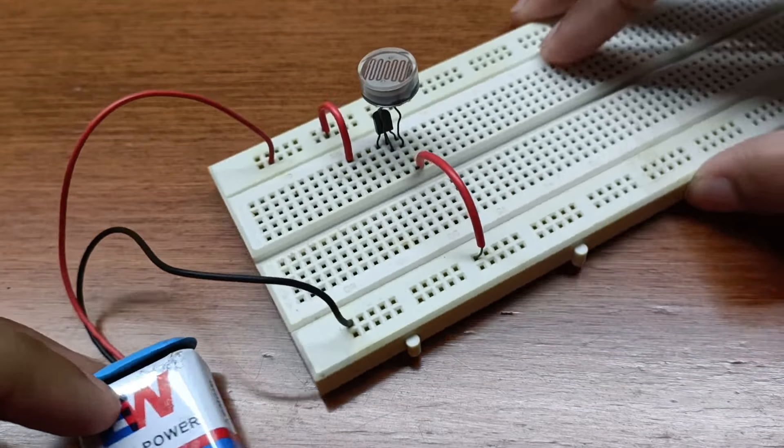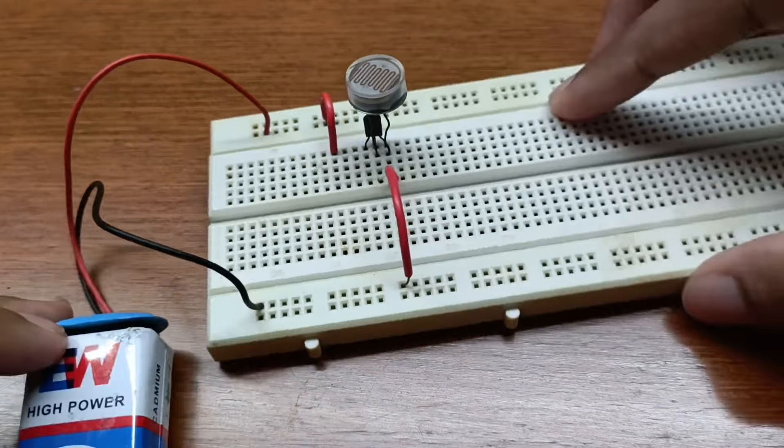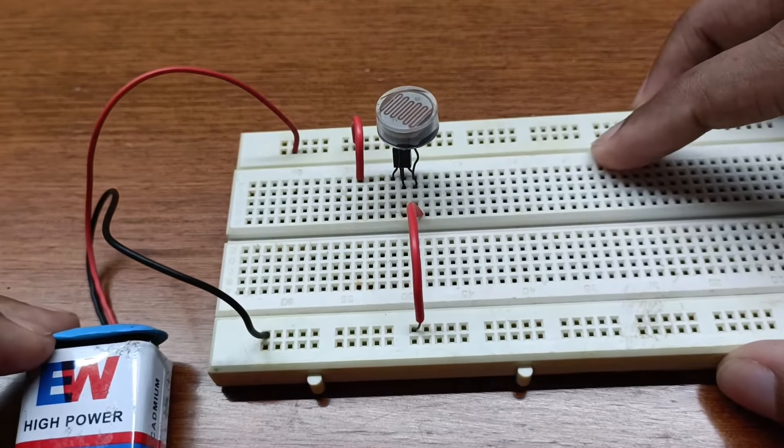Connect the LDR to the base and emitter of the BC 507 transistor.